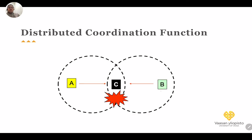The DCF has a problem: if terminal B is communicating with terminal C, terminal A may not hear B because B's signal doesn't reach A — this is the hidden terminal problem. When A listens and hears nothing, it may start transmitting to C or elsewhere, causing a collision at C.